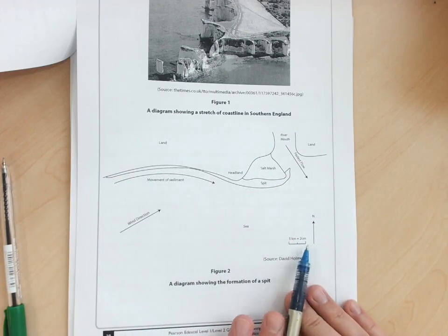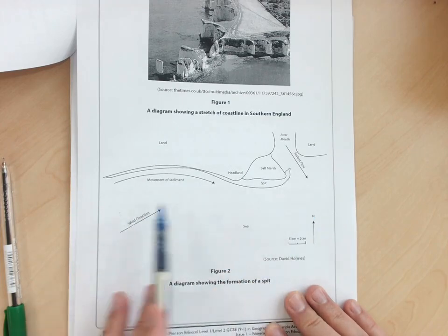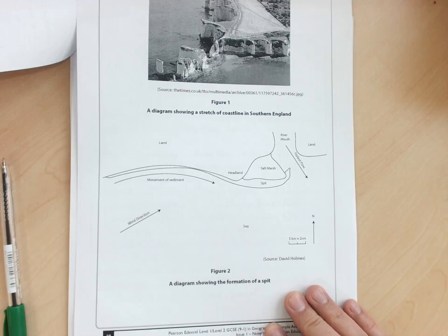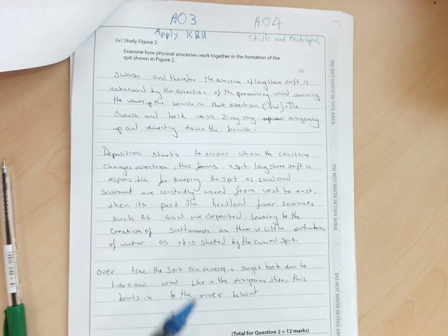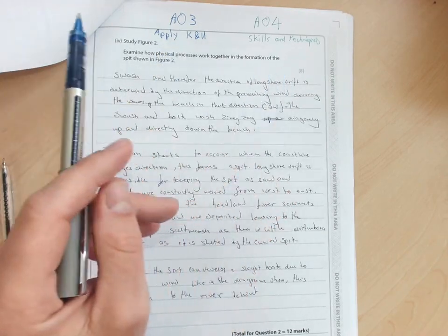So before you start, just have a look at it. We've got a scale down there, you could use that. We've got the direction of wind and the north arrow, so you can use those two in conjunction to say where the directions are. To make it a little easier to follow, I'm going to mark AO3 in blue and AO4 in green.